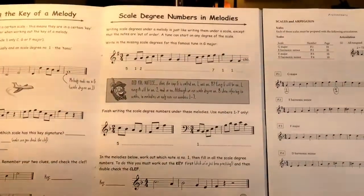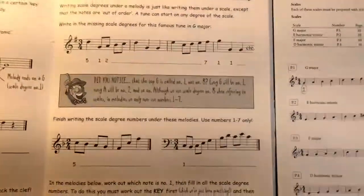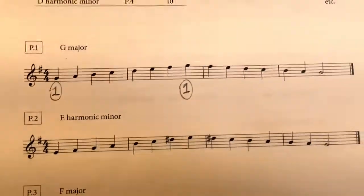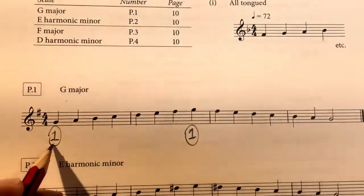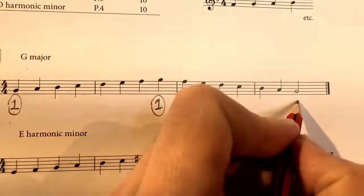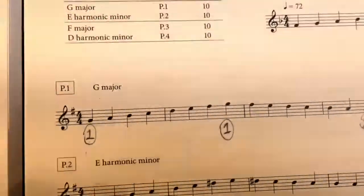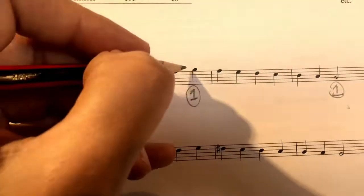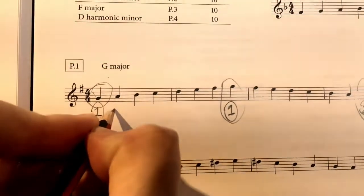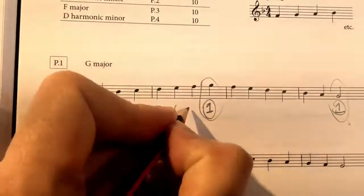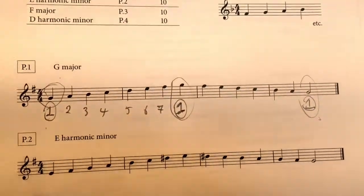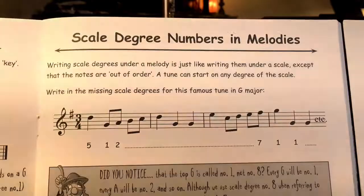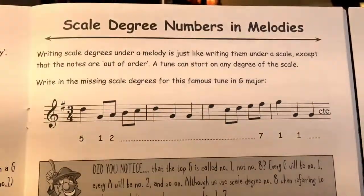Let's start with page 37: scale degree numbers in melodies. Our scale degrees come from the major scales we've already learnt in this grade. Here is our G major scale — the first note of the scale will always be called number one, and the last note will also be called number one. When working out scale degrees in melodies, all G's will be called number one no matter where they are on the staff.